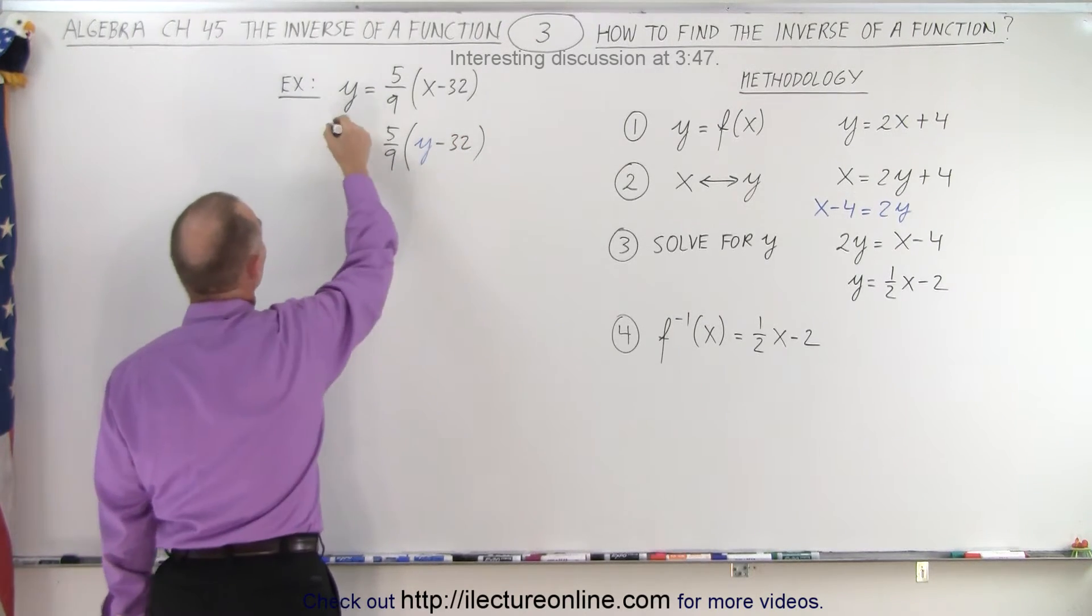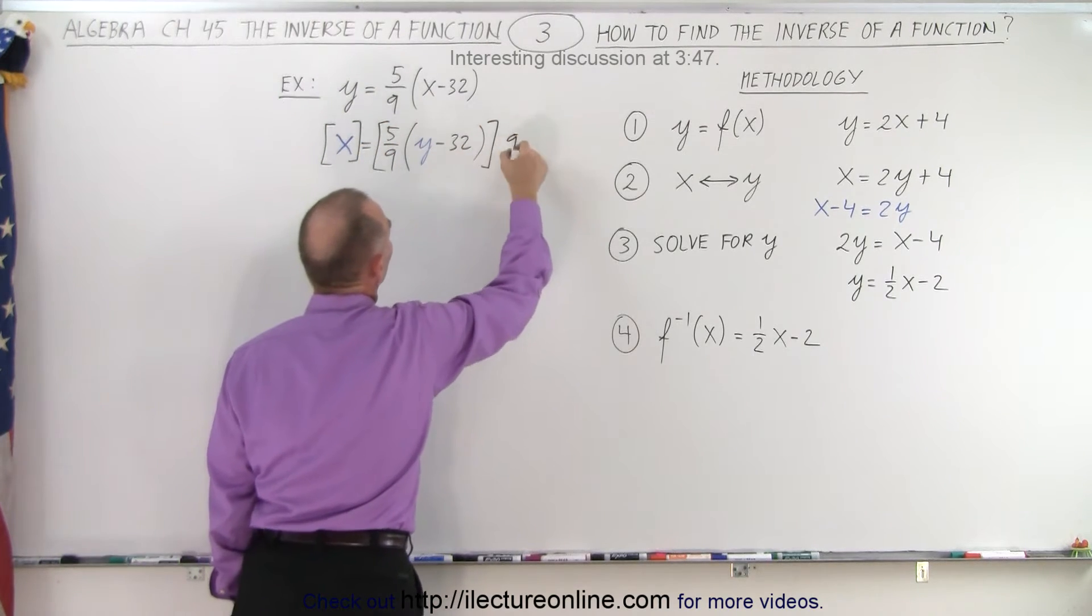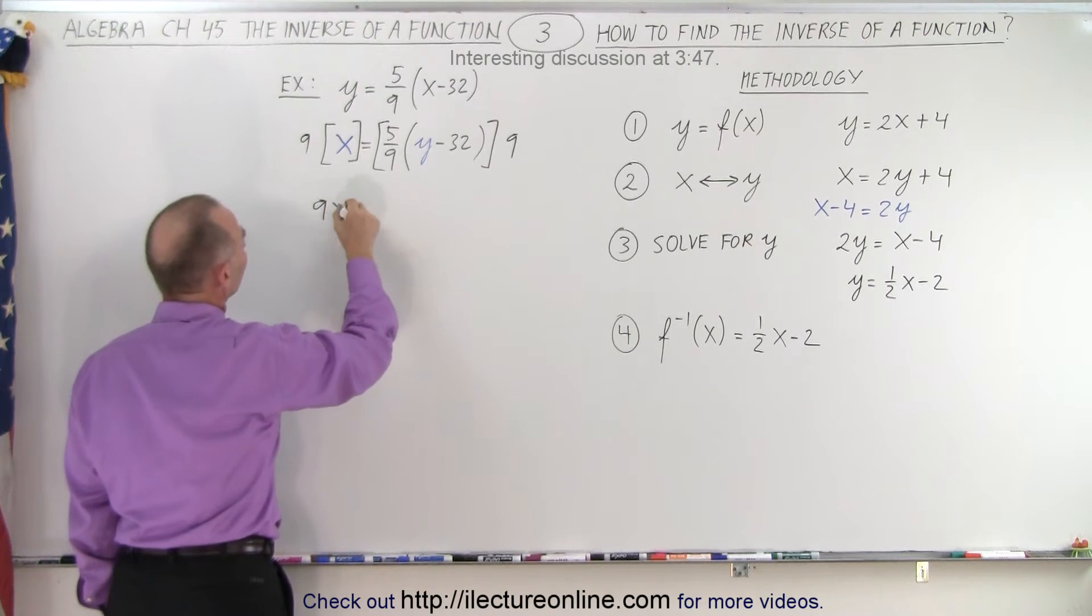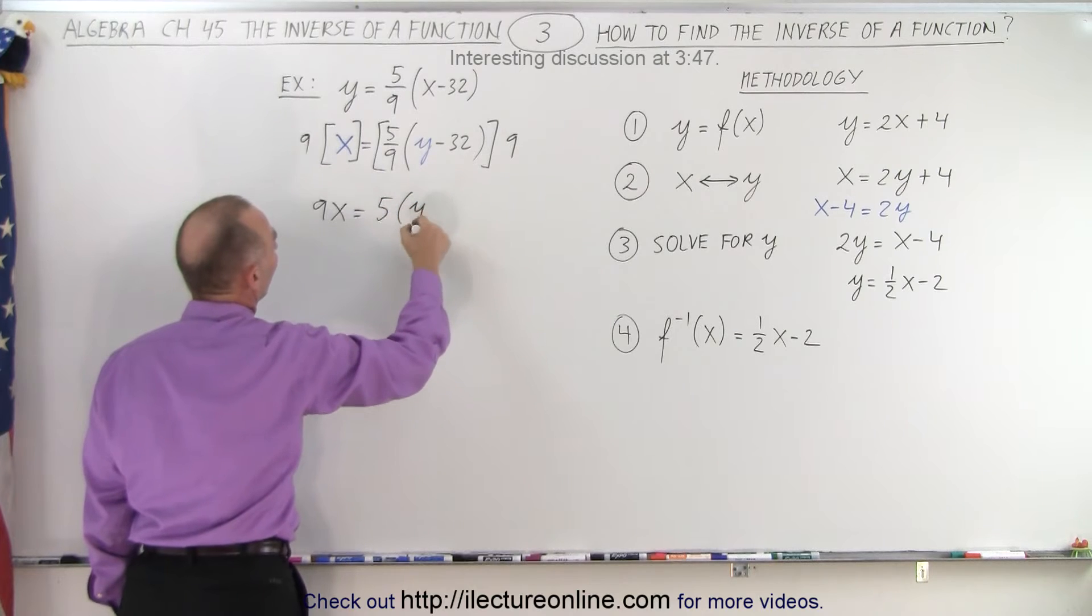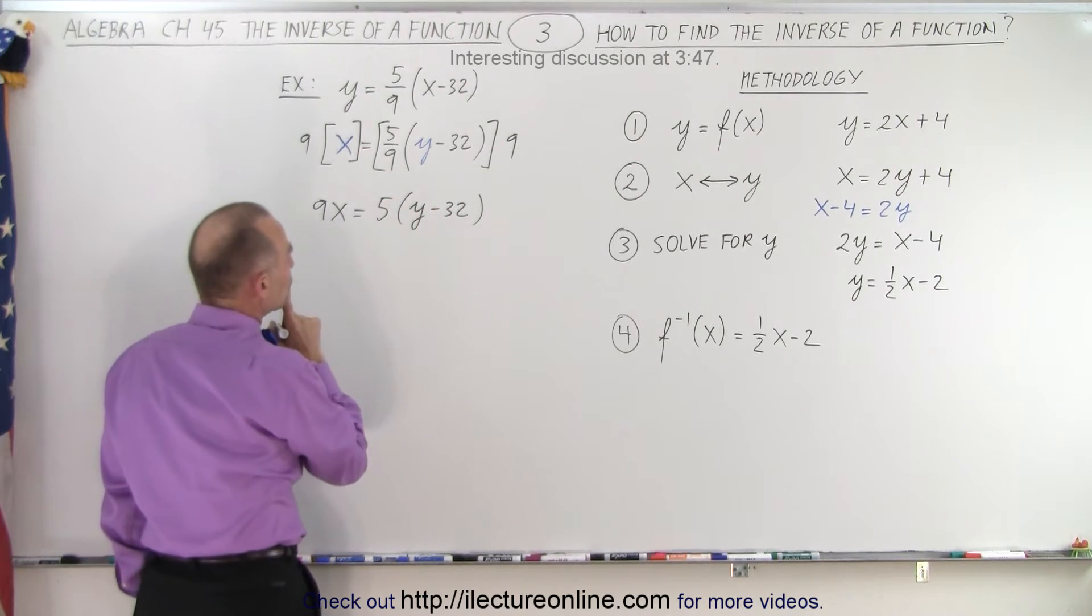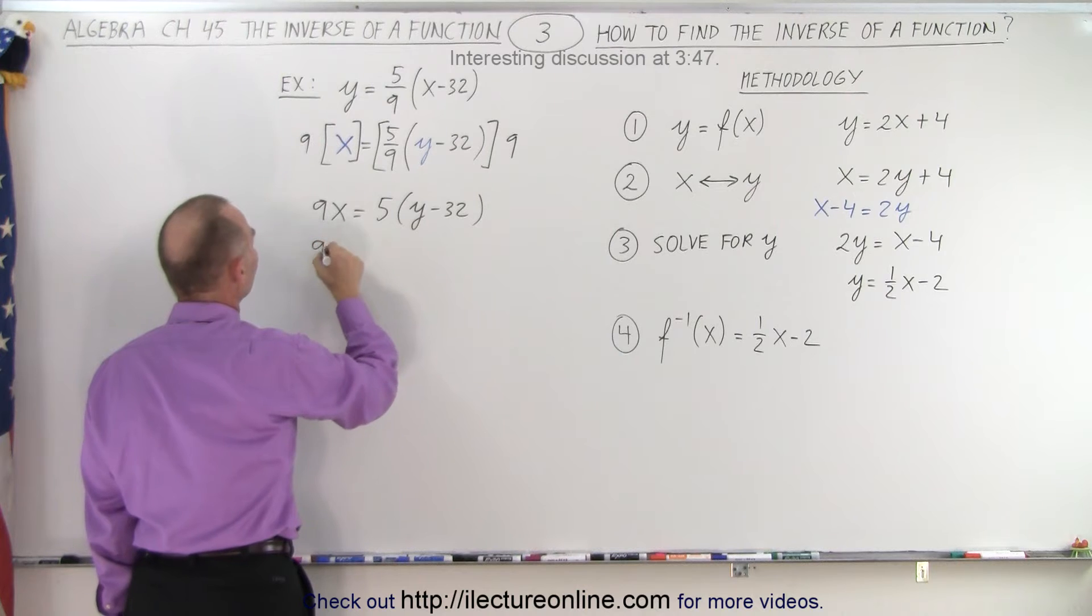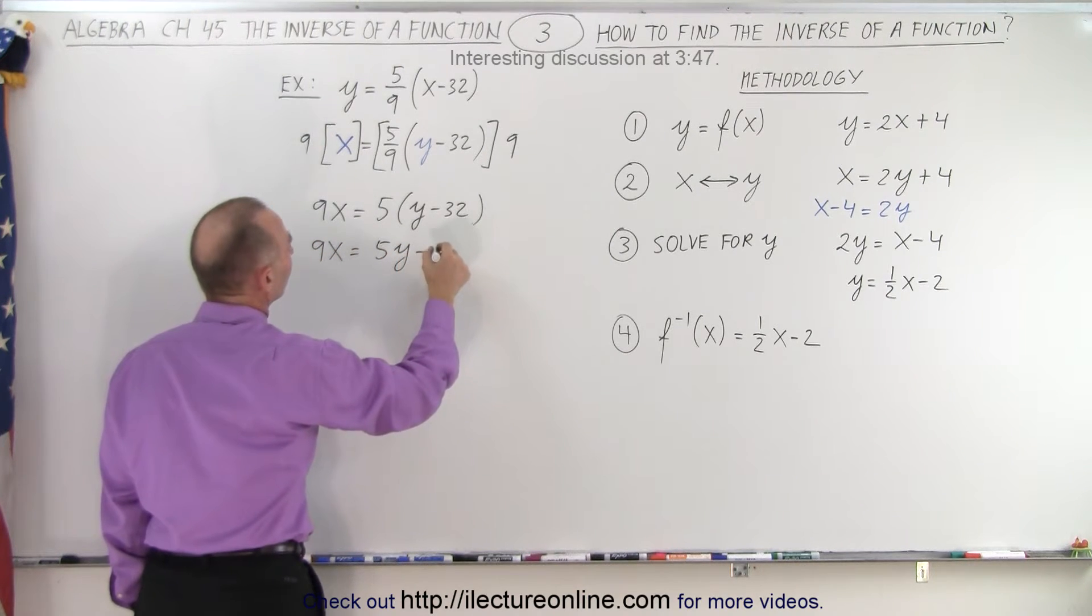So the first thing we're going to do is multiply both sides by 9 to get rid of that fraction. So multiply the left and the right side by 9. So we end up with 9x is equal to the 9th cancel out 5 times y minus 32. The next thing we're going to do is let's multiply everything out. So we have 9x is equal to 5y minus 160.